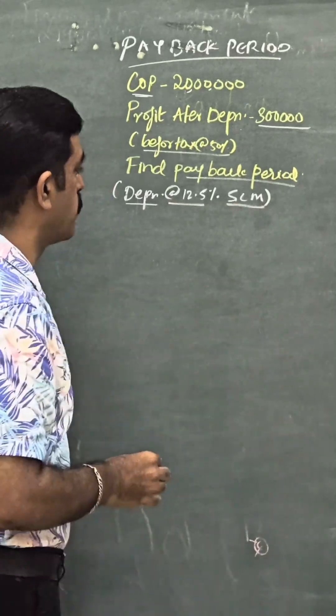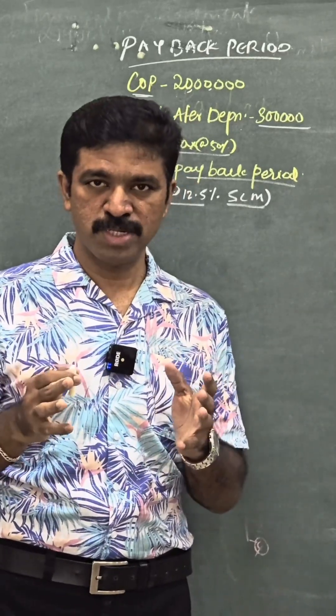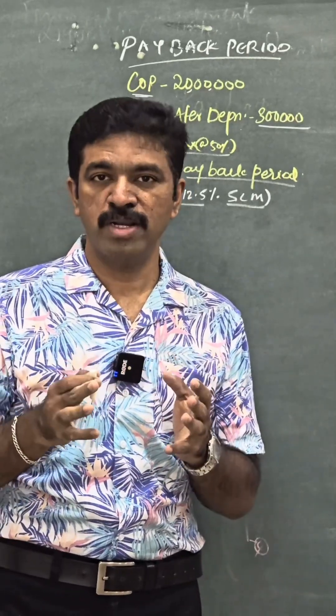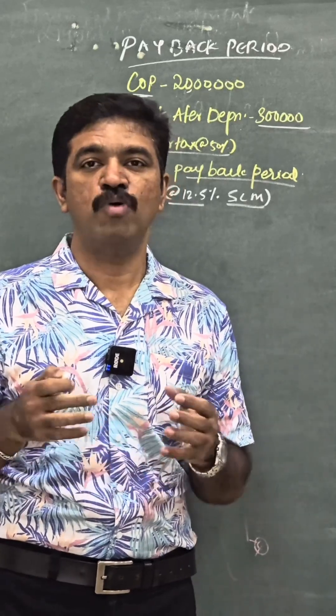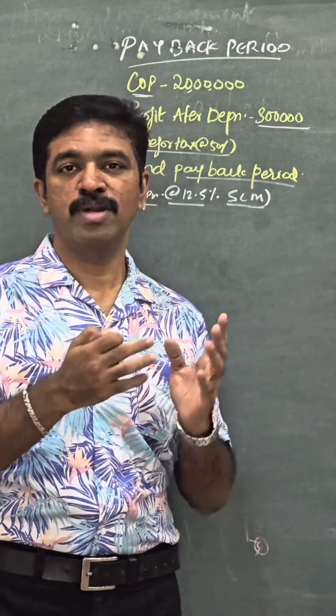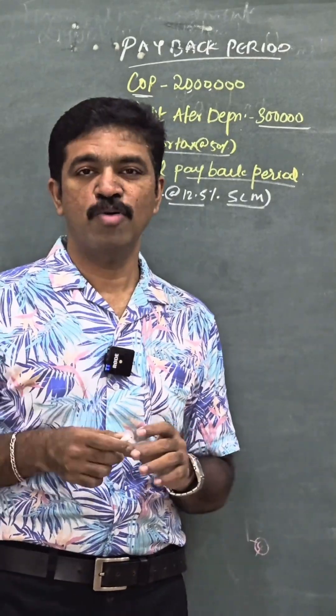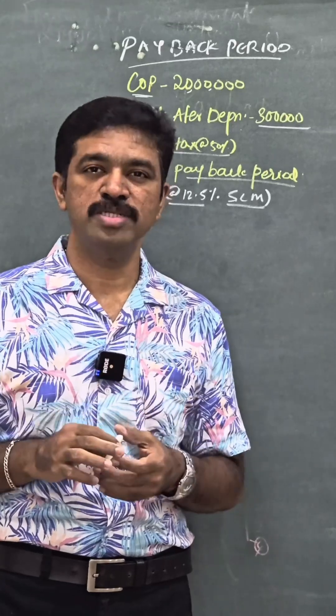At first, how do we calculate the payback period? We take the investment and divide it by annual cash flow after tax. And what is missing here? Annual cash flow after tax. Because you are only given the profit and depreciation related information. So now our task is finding out what is that annual cash flow after tax.